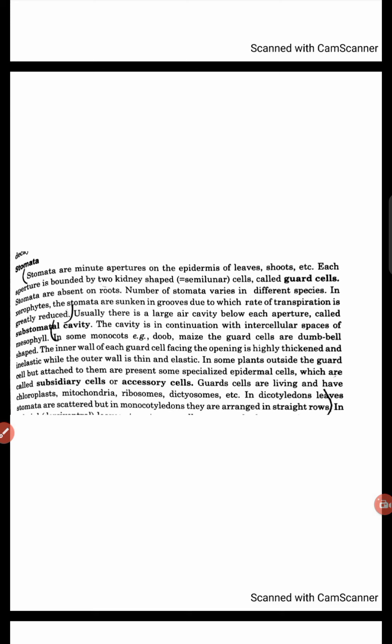Guard cells have a kidney shape. The number of stomata varies in different species. Sunken stomata reduce the rate of transpiration. In the case of guard cells in grasses, they have a dumbbell shape.